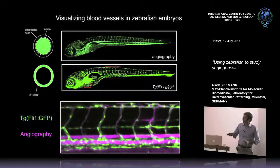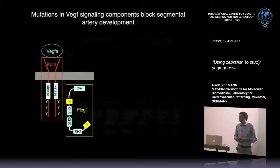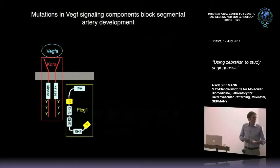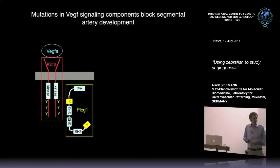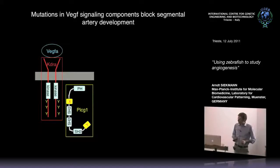Now I would like to introduce the genetic factors that form intersomitic vessels in the trunk of the zebrafish embryo. Two very important genetic factors have been identified for embryonic angiogenesis. The first is VEGF signaling - vascular endothelial growth factor - a tyrosine kinase receptor signaling pathway where ligand VEGF-A, among others, binds to a receptor and by downstream signaling elicits target gene transcription and controls angiogenesis.